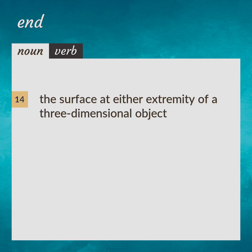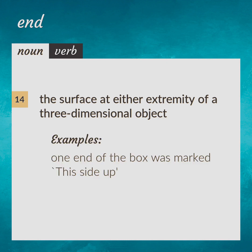The surface at either extremity of a three-dimensional object. Example: One end of the box was marked 'This side up.'